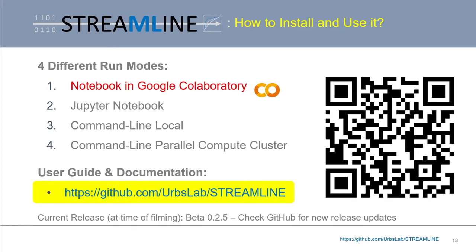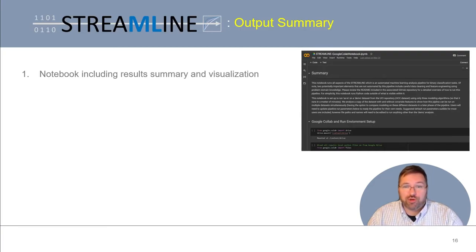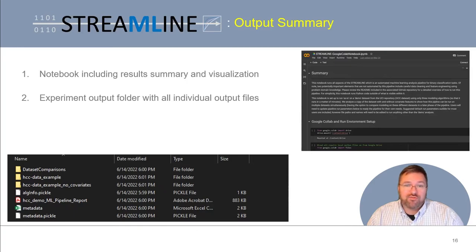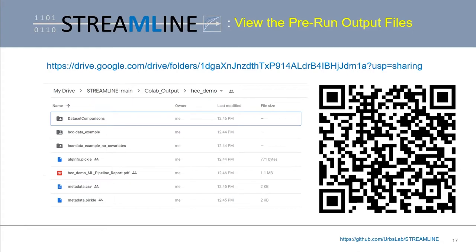The current version of Streamline at the time of recording is beta 0.2.5. Let's also review the main outputs. If you ran Streamline in either Google Colab or Jupyter Notebook, you can track and view pipeline outputs within the notebooks themselves. All results, figures, dataset partitions, and pickled objects will be organized into an experiment output folder, which will also include the automatically generated PDF summary report. We ran two datasets making up the demonstration, and the output folder includes a folder comparing results of the two datasets and a folder corresponding to each dataset with all dataset-specific files.